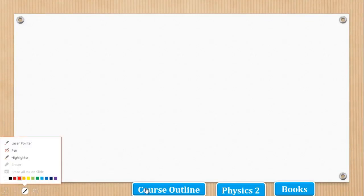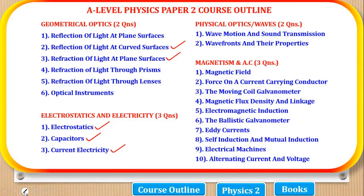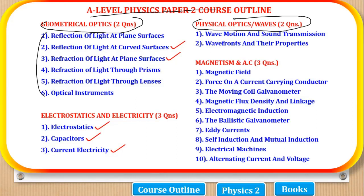Before we proceed, let's first look at the course outline of this paper. Physics Paper 2 is divided into 4 parts. The first part is Geometrical Optics where 2 questions come from these topics. The second part is Physical Optics where 2 come from these topics. The third part is Electrostatics and Electricity where 3 questions come from these topics. And the fourth part is Magnetism where 3 questions come from these topics.